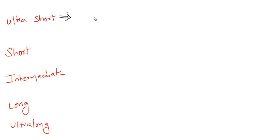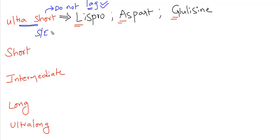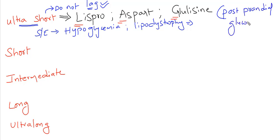I have a small mnemonic for ultra short acting: these drugs do not LAG. Lispro, aspart, and glulisine are the drugs that come under ultra short acting insulin. That means these act very fast. Some side effects include hypoglycemia and lipodystrophy. These are mainly useful to control postprandial glucose levels.